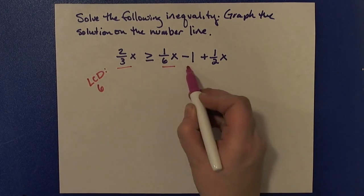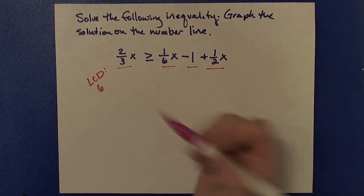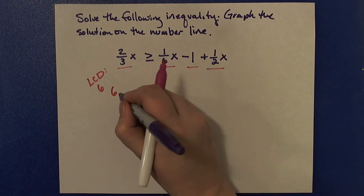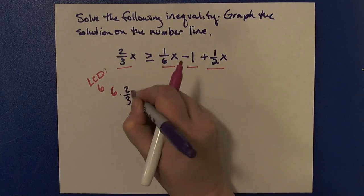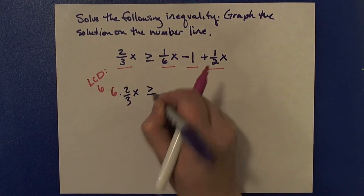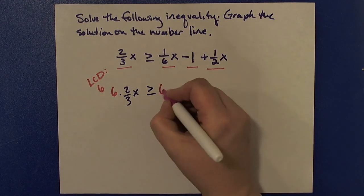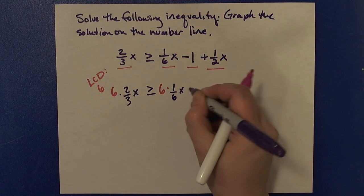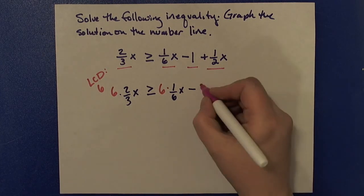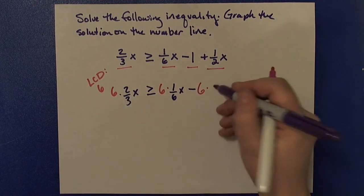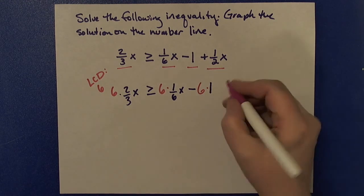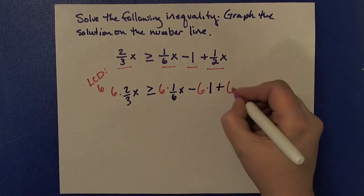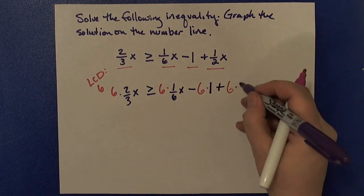And remember, that means each term on each side gets multiplied by that 6. So I'll have 6 times 2/3 x is greater than or equal to 6 times 1/6 x minus 6 times 1 plus 6 times 1/2 x. So each term was multiplied by the 6.